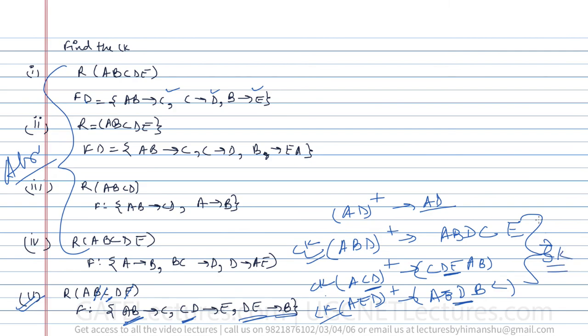Therefore there are three candidate keys for question five: ABD, ACD, and AED. The set of candidate keys is always smaller than the set of super keys. There are many examples like these, but this much is enough to understand how to find candidate keys and how many candidate keys are possible in a given relation.